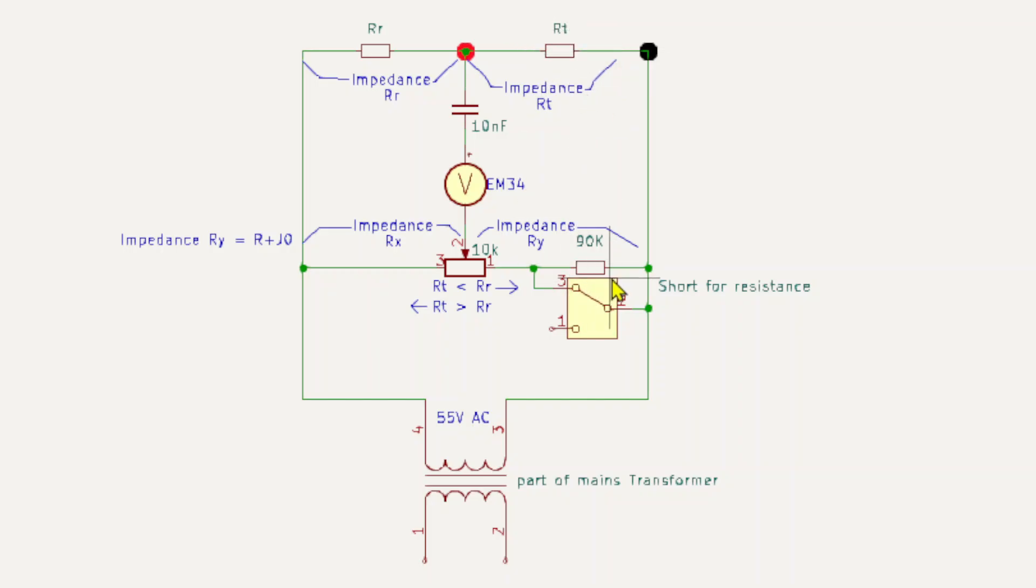So if we look closely, the 90k is shorted out by this switch for all the resistance ranges. It's bypassed by the switch. So the bridge is said to be in balance or nulled when the ratio of RR and RT is equal to the ratio of RX and RY.